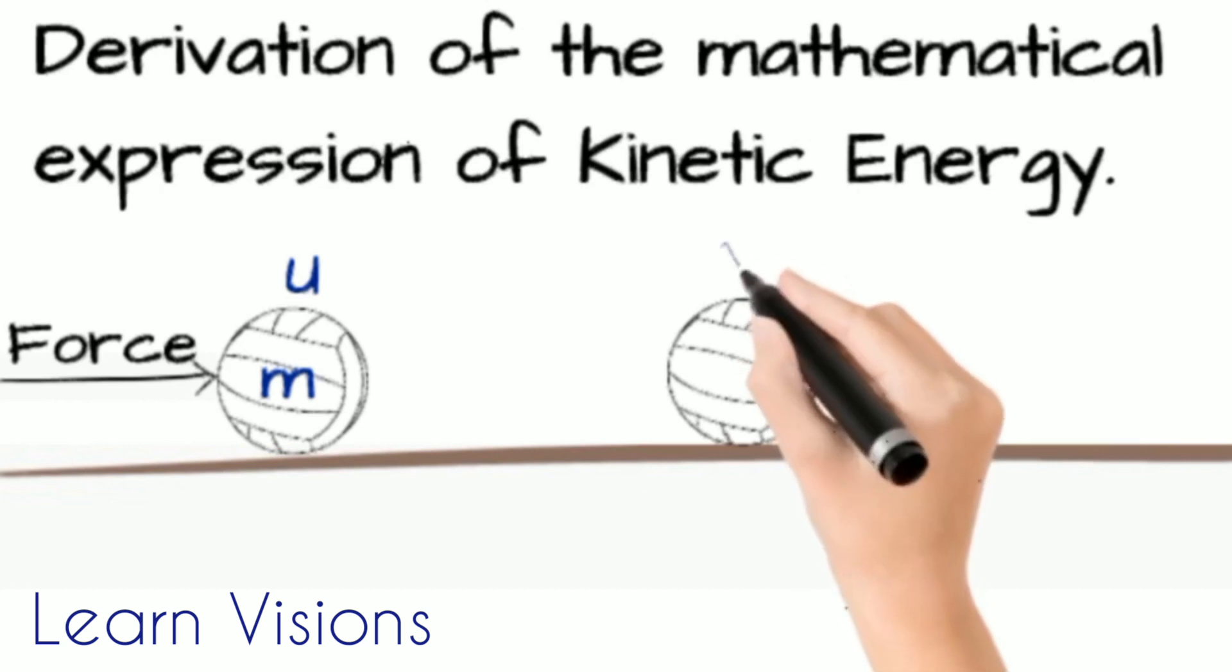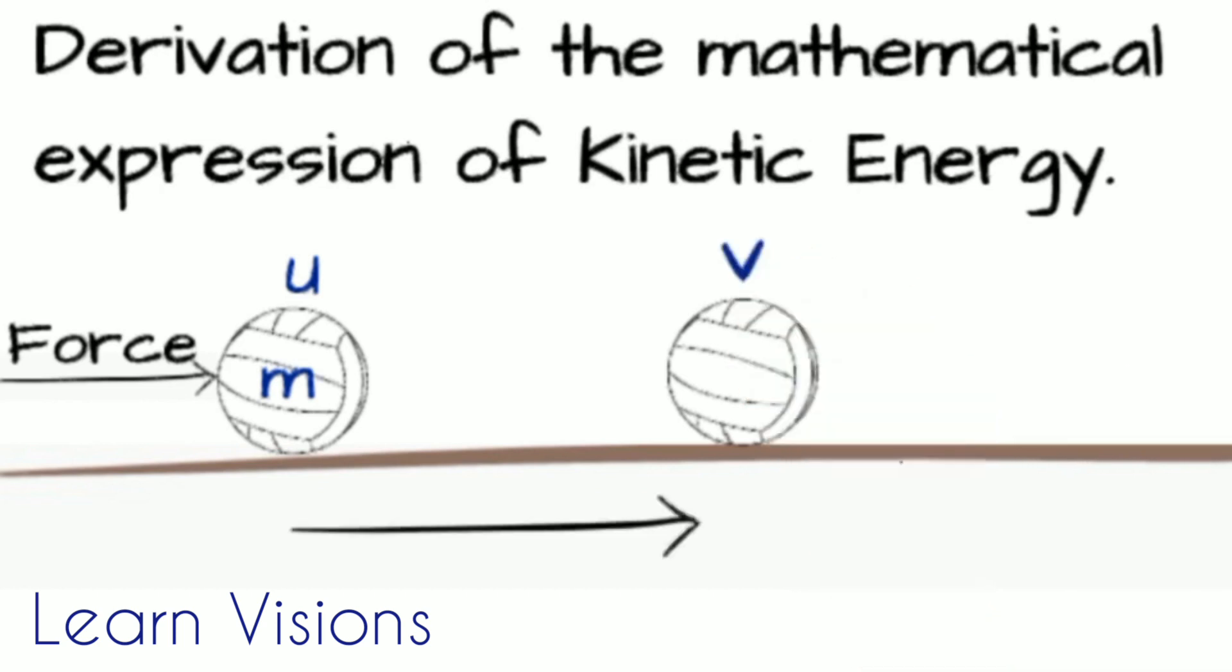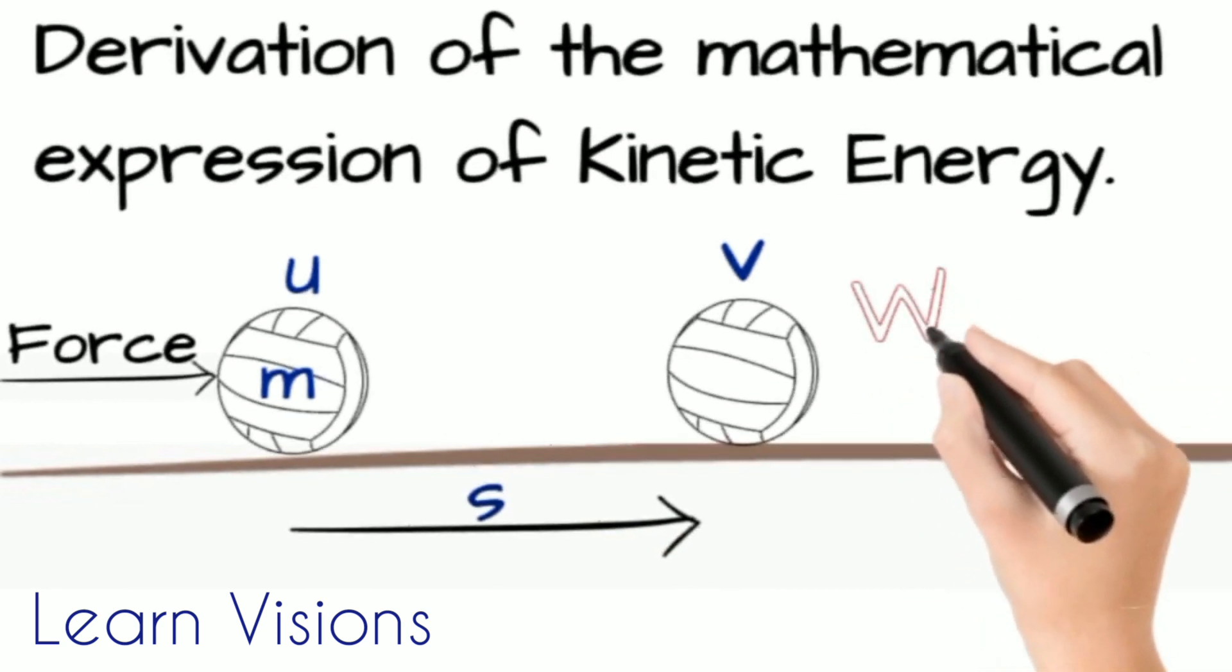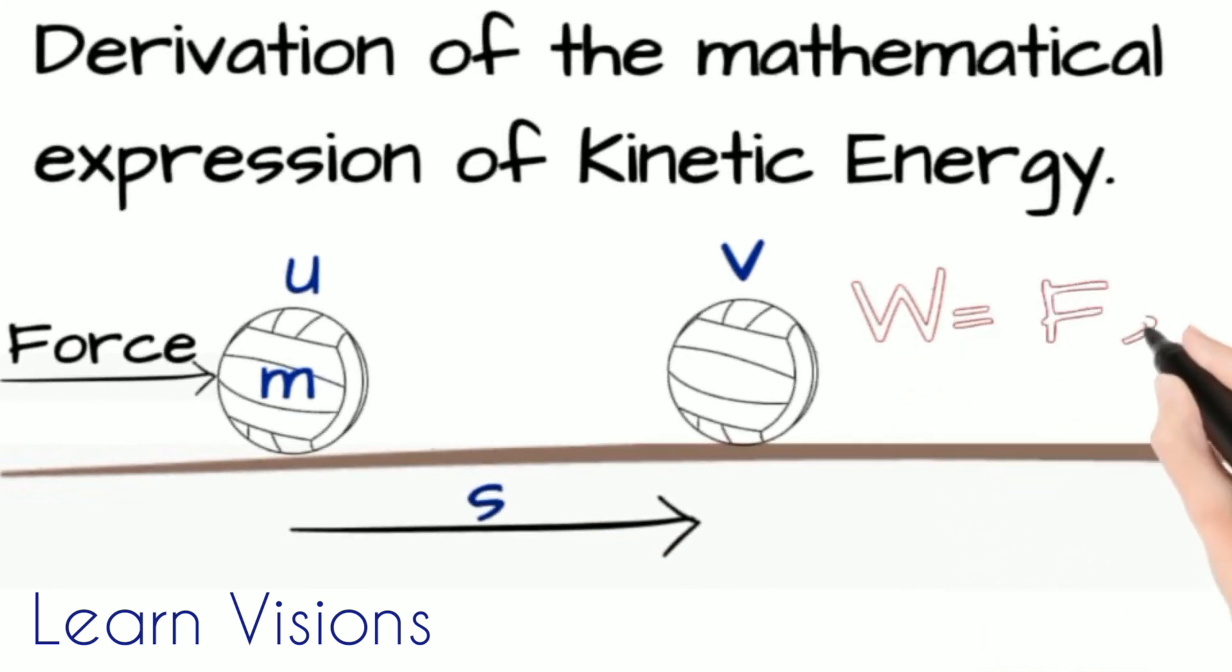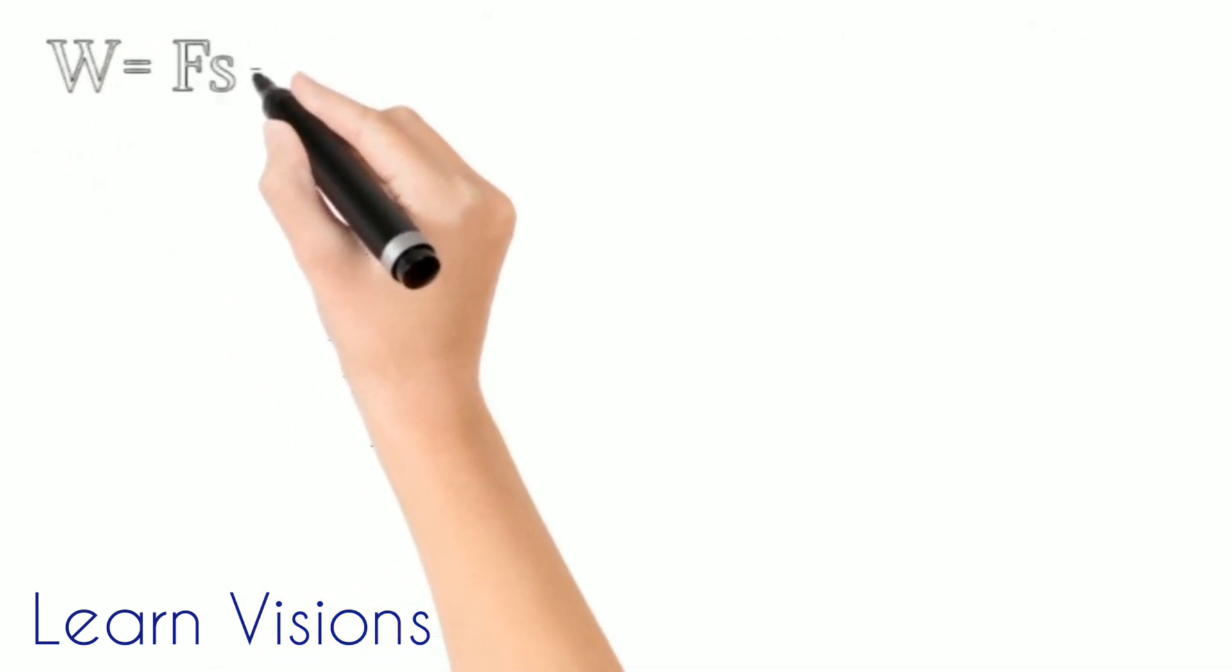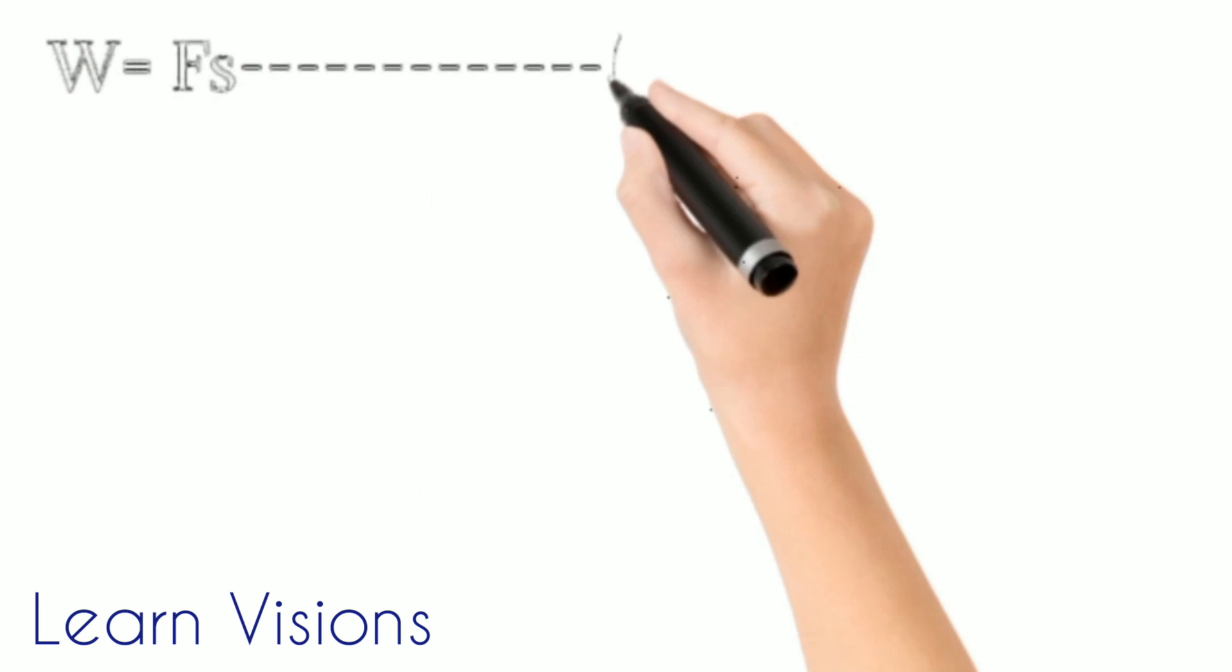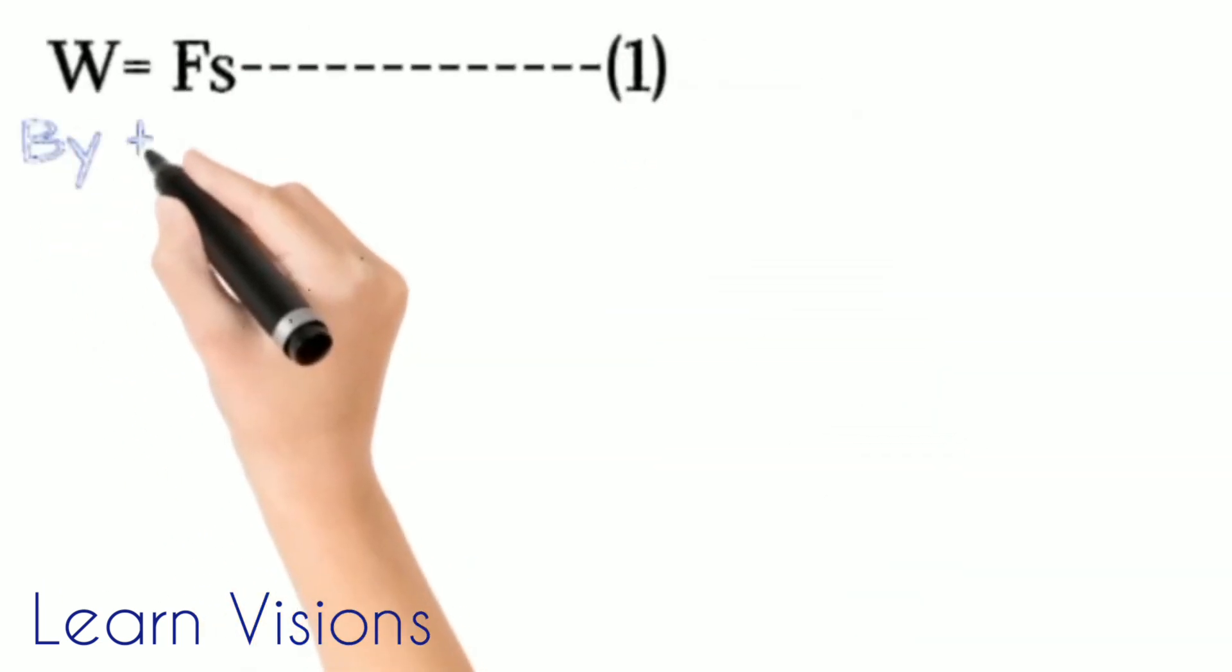With velocity v and create displacement s, which is caused by the force applied. As force is applied and displacement occurs, which means that work is done. Therefore, W equals F times s, which is the formula for work done. Now let's consider this equation as equation number 1.